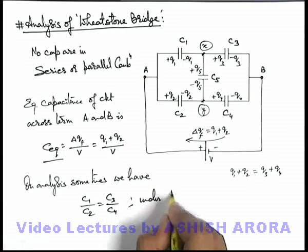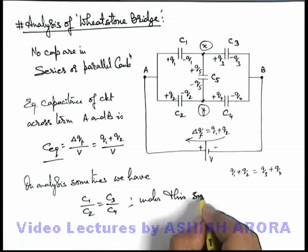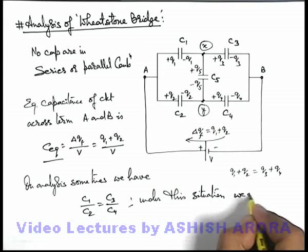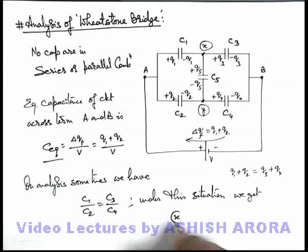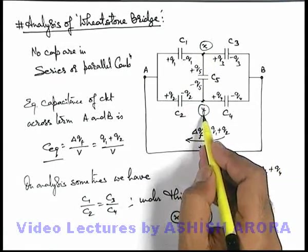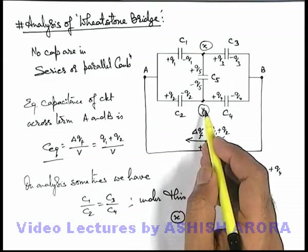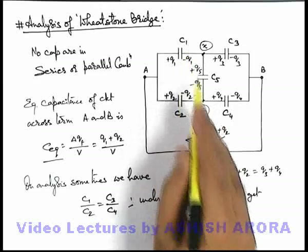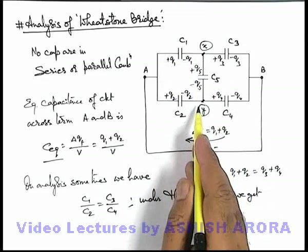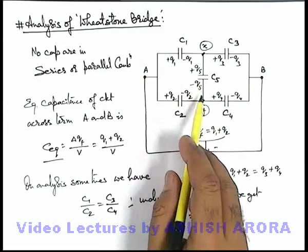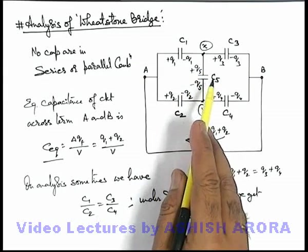Under this situation we get potential X is equal to potential Y. And if potential X and Y are equal, then we can directly state no charge will accumulate on the plates of capacitor C5 as there exist no potential difference. And if there is no charge or no potential difference across capacitor C5 it'll remain uncharged.